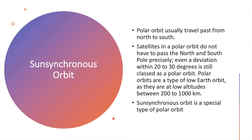The next type of orbit is the sun-synchronous orbit. Before going to sun-synchronous orbit, let us discuss a little about polar orbit. Polar orbits usually travel from north to south. Satellites in a polar orbit do not have to pass the north and south poles precisely — a deviation within 20 to 30 degrees is still classed as a polar orbit. Polar orbits are a type of low Earth orbit at altitudes between 200 to 1000 km.